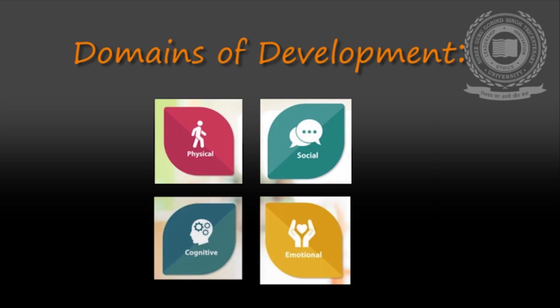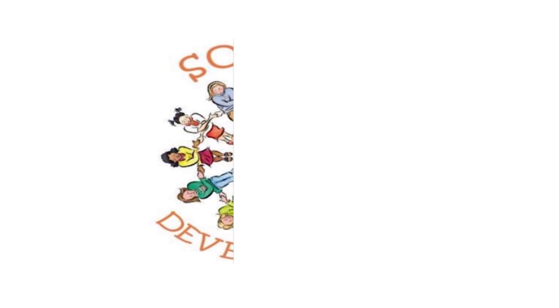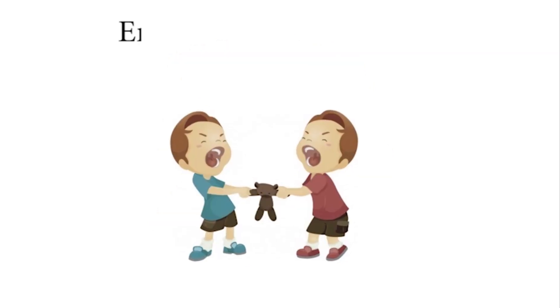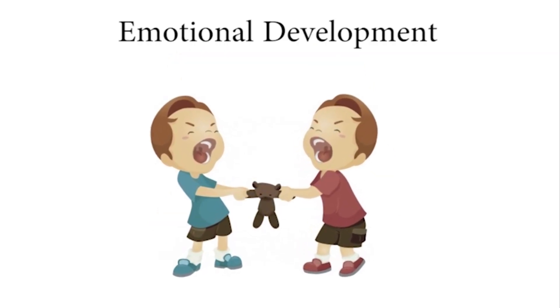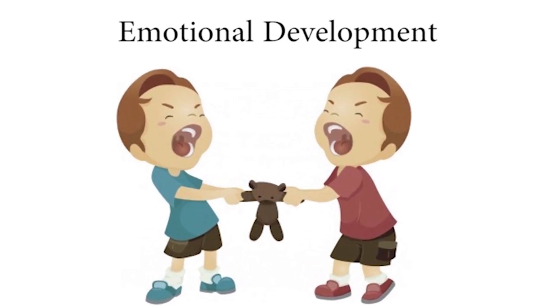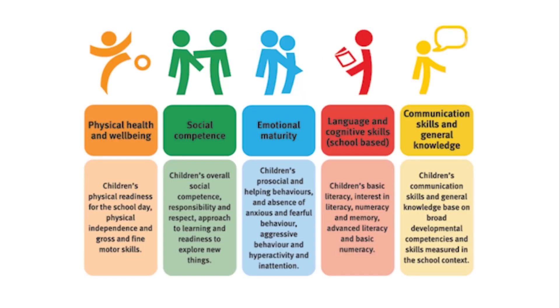Development occurs in different domains such as biological, social, emotional and cognitive. The biological development is indicative of the changes in our physical being. The social development is related to the changes in our social relationships. The emotional development is related to the changes in our emotional understanding and experiences. And lastly, the cognitive development helps us to learn about the changes in our thought processes. These are the different domains in which development occurs.